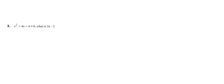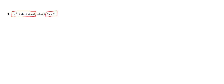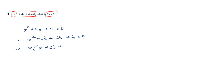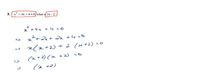Let us move on to question number 3. We have the equation x squared plus 4x plus 4 equals 0, and we need the value of 2x minus 2. First we find x. Breaking 4x into 2x plus 2x, we get x(x+2) plus 2(x+2) equals 0, which factors as (x plus 2) whole squared equals 0. Therefore x plus 2 equals 0, which gives x equals minus 2.